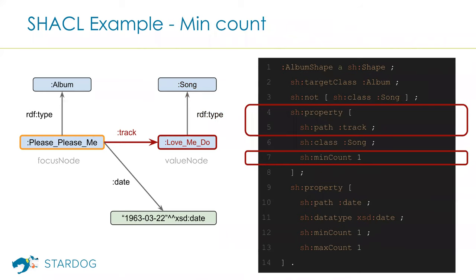The next constraint in this property shape is a min count constraint. Count constraints are not about a specific value node; instead, they're about the set of all value nodes reachable from the focus node. The min count says that set should have at least one element. For our focus node Please Please Me, there is only a single node reachable by the track property path, so this constraint is satisfied because there's at least one node.